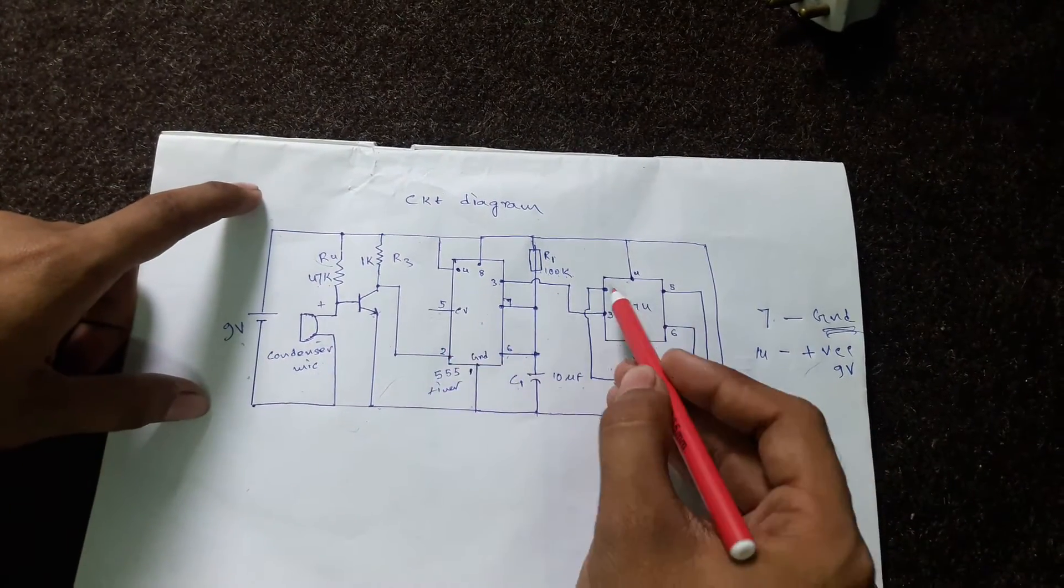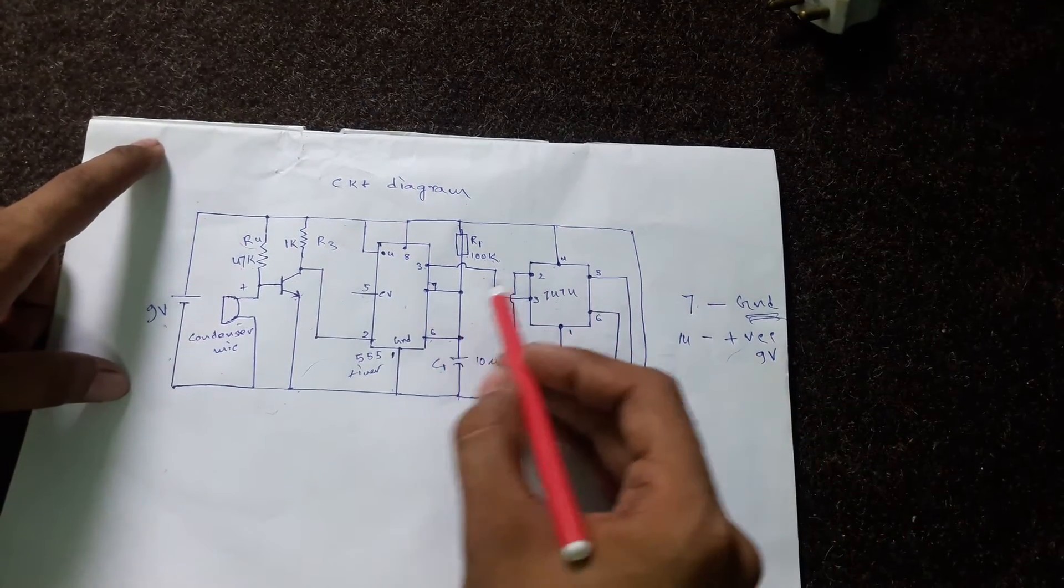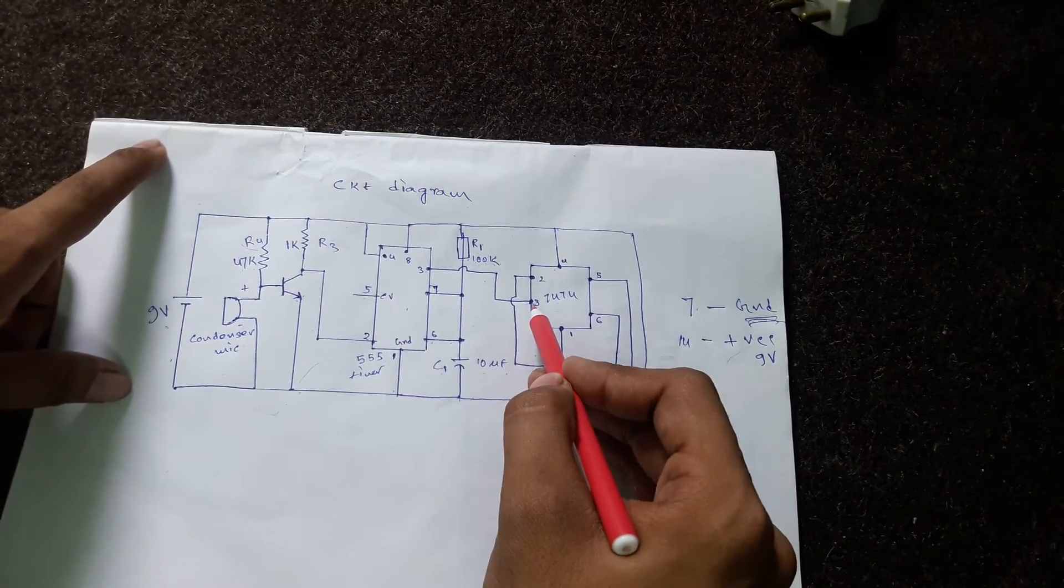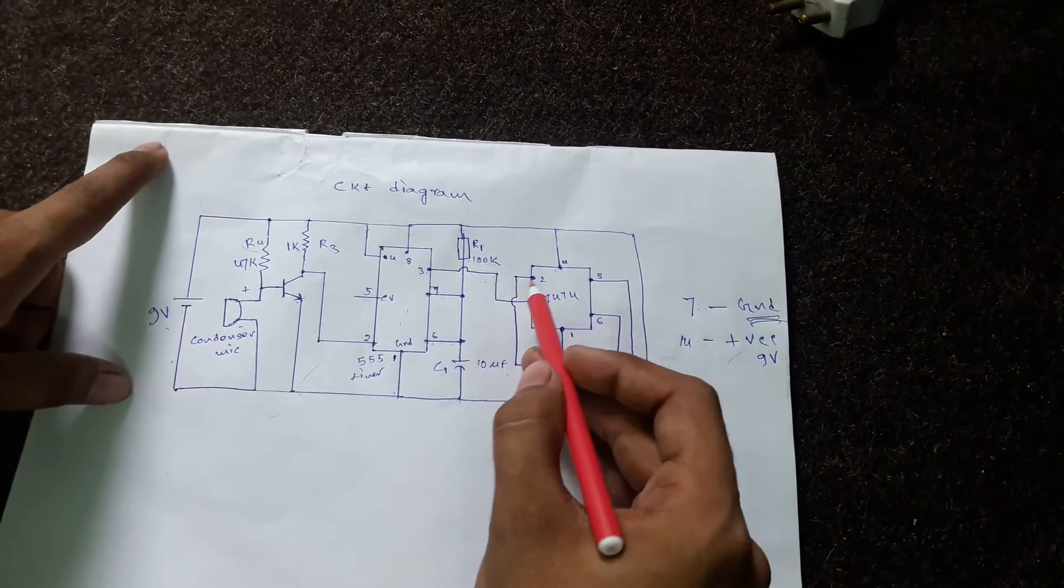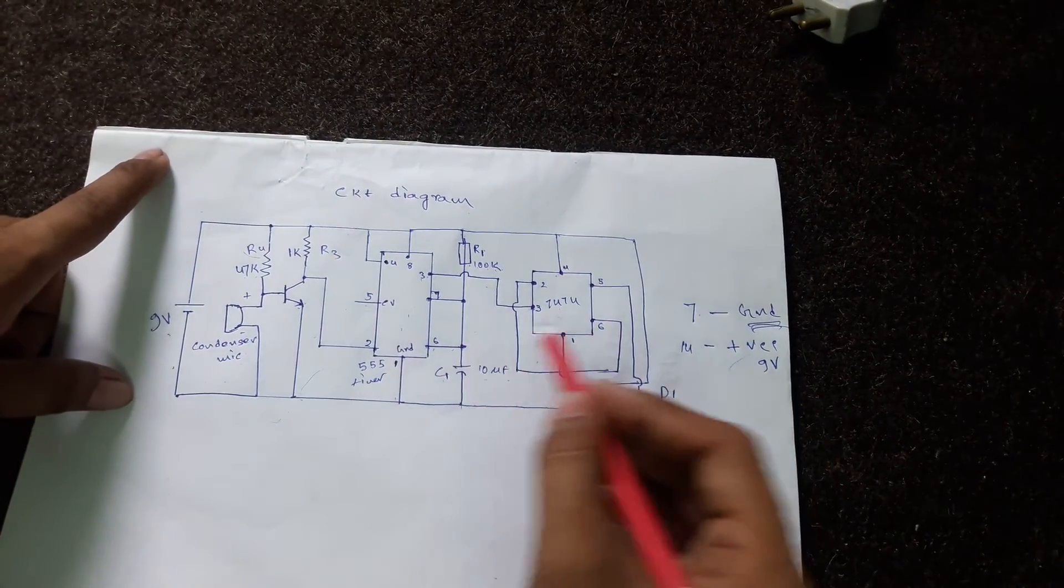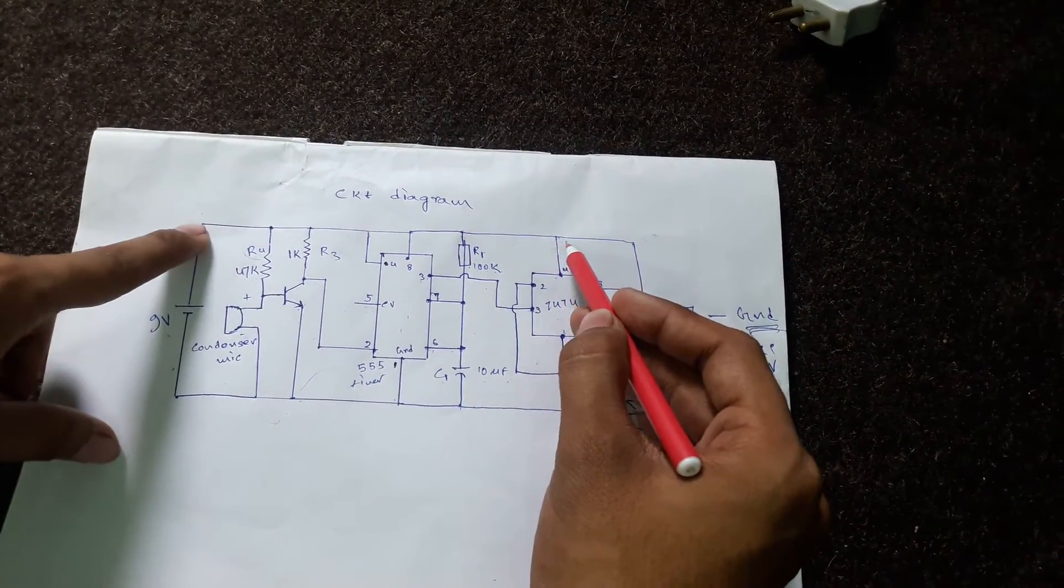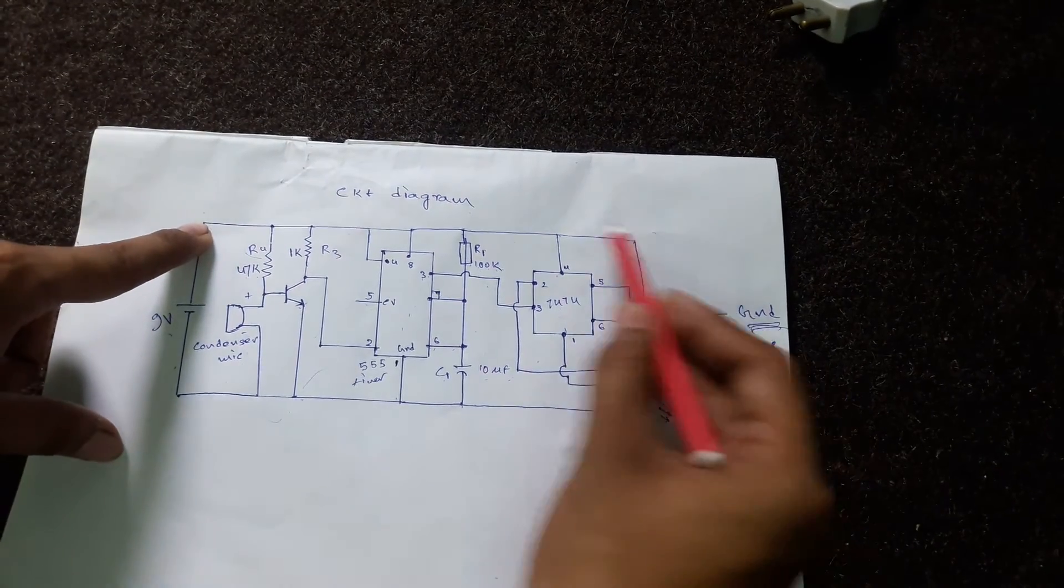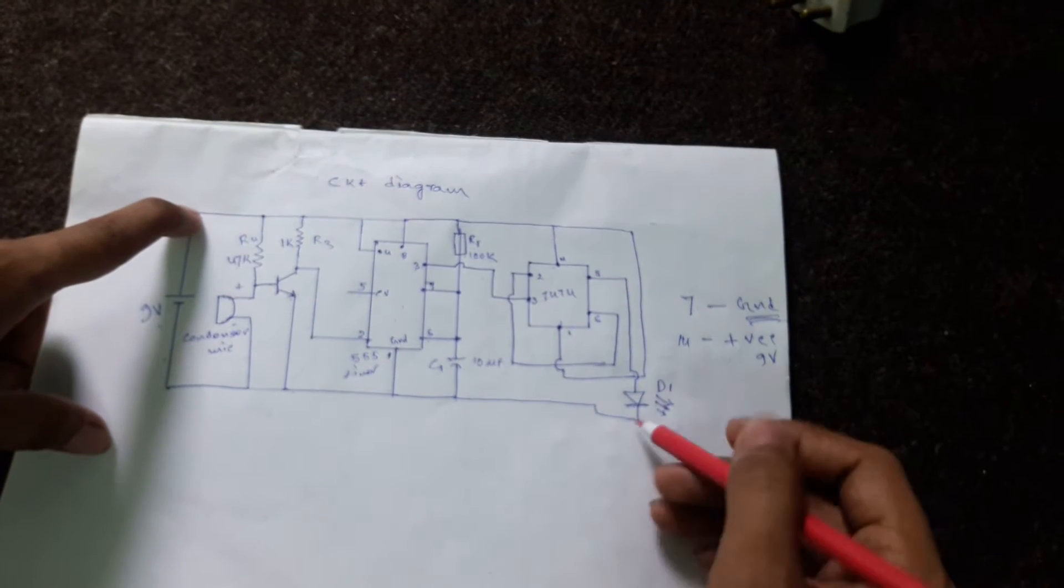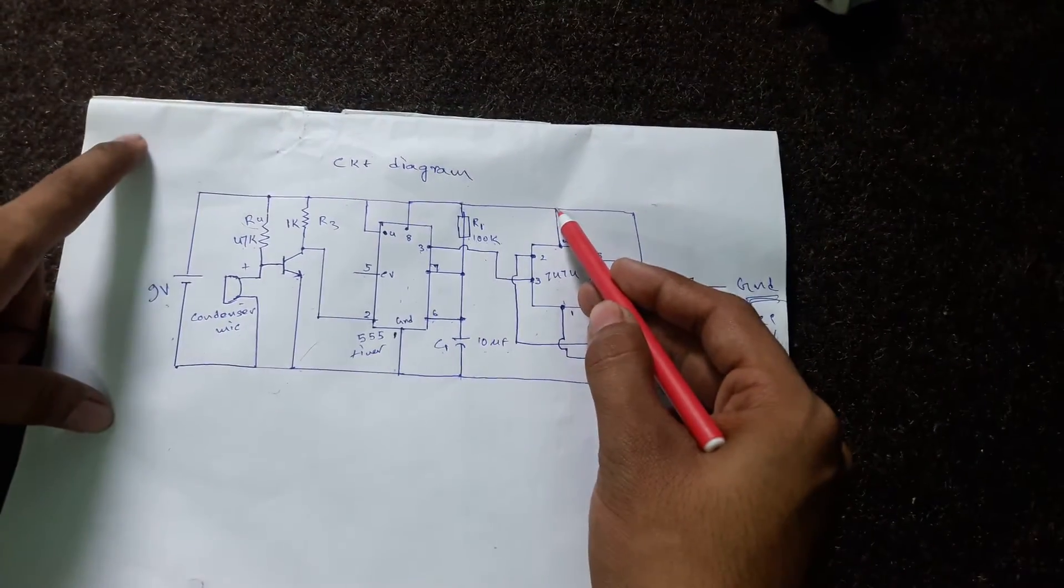Here comes the IC 7474, also known as D-type flip-flop. We're getting the clock pulse at terminal 3 from the output of the 555 timer. Pins 2 and 6 are shorted. From pin 1 it goes to plus 9 volts. From pin 5 we connect the LED, with the negative terminal grounded. Pin 4 goes to plus VCC.